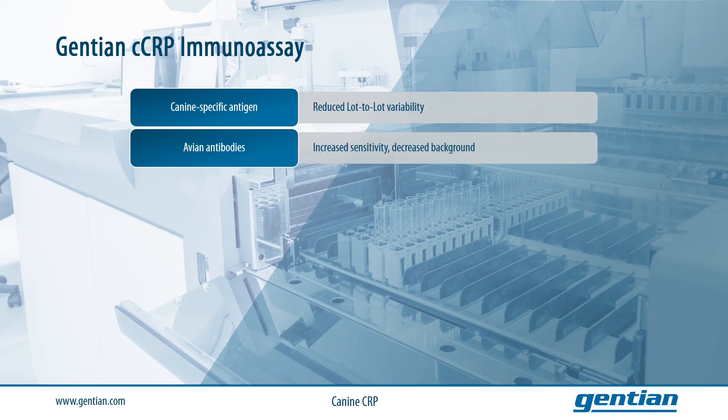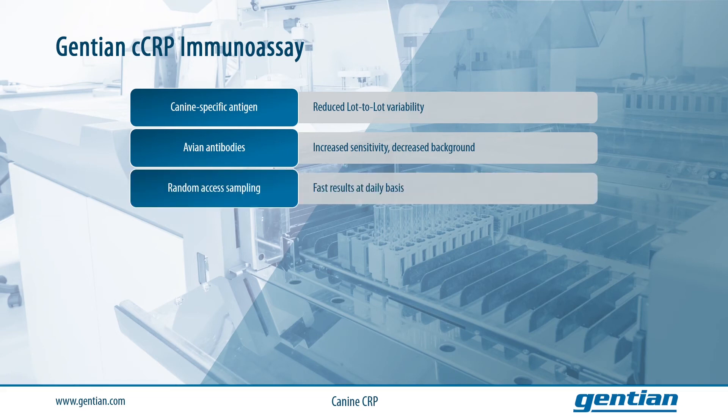In addition, the assay uses antibodies of avian origin, which have the advantage of increased sensitivity and less background signal, since avian antibodies have less interference — for example with the rheumatoid factor and the complement system. The assay allows random access sampling, meaning that any number of samples can be run, from single inputs to several samples in the same run, allowing high throughput and fast results on a daily basis.